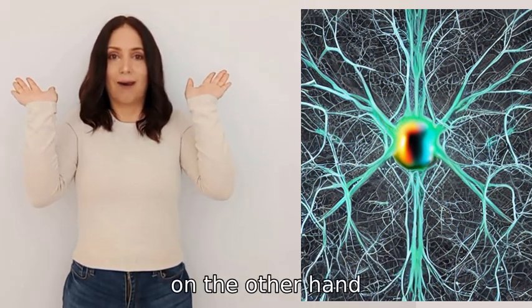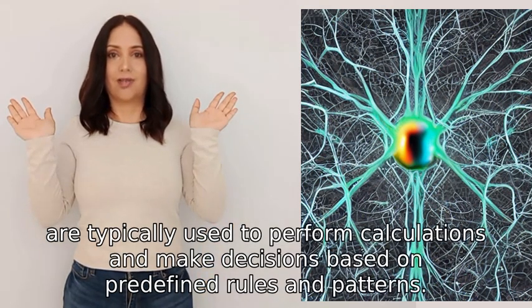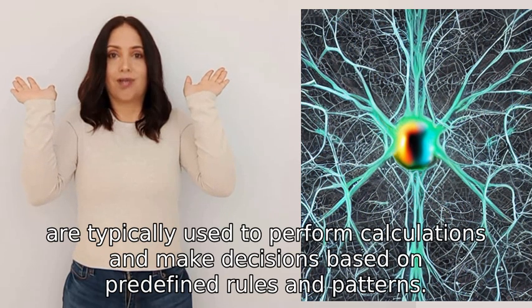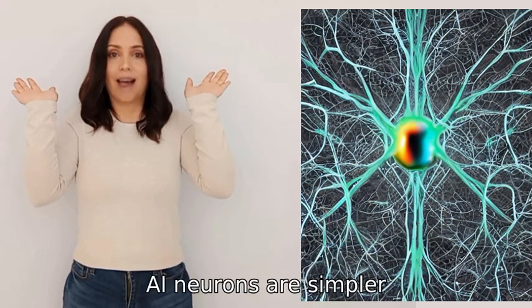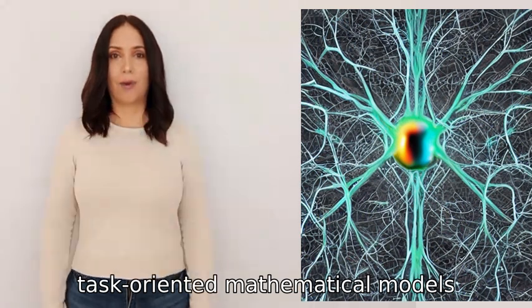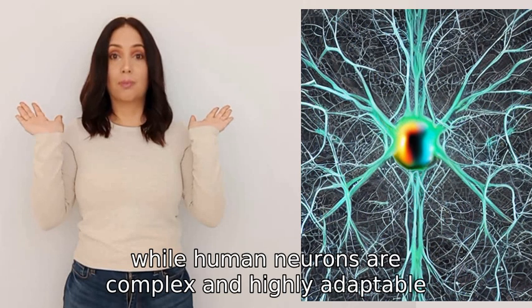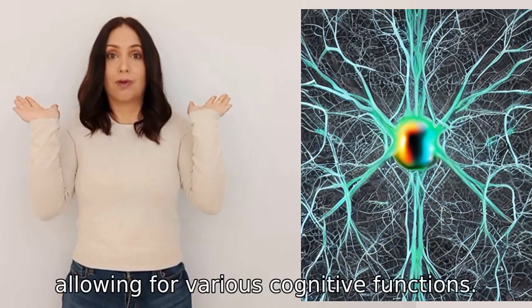AI neurons, on the other hand, are typically used to perform calculations and make decisions based on predefined rules and patterns. In summary, AI neurons are simpler, task-oriented mathematical models, while human neurons are complex and highly adaptable, allowing for various cognitive functions.